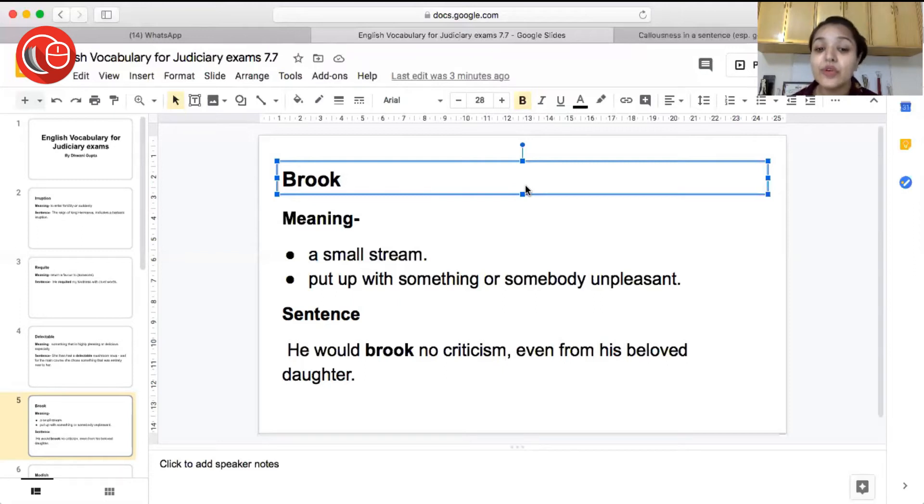Sentence: He would brook no criticism even from his beloved daughter. So he would not put up with criticism even from his beloved daughter. So he would not take criticism even from his lovely beloved daughter.